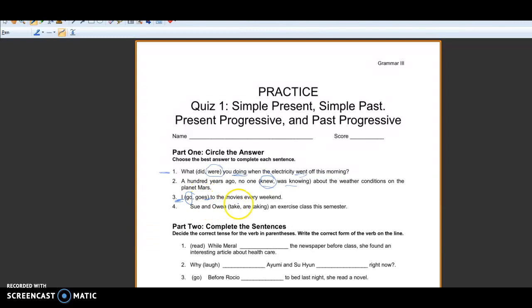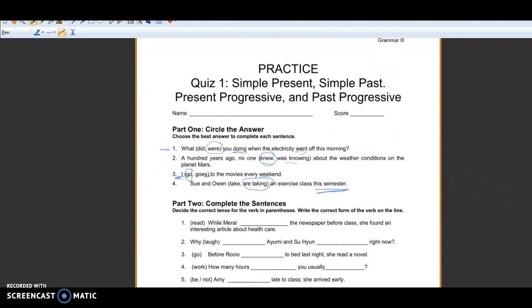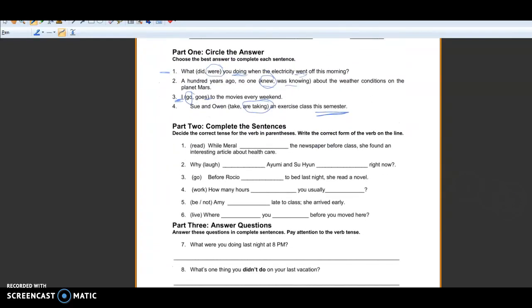Last one, Sue and Owen take or are taking an exercise class this semester. The key word in this sentence is this semester. This means this is something that is happening these days or around this time. That means we need to use a progressive form, are taking an exercise class because it's happening right now during the present period that we're talking about. If you said Sue and Owen take an exercise class this semester, this might be possible. That's the one that's sort of questionable.